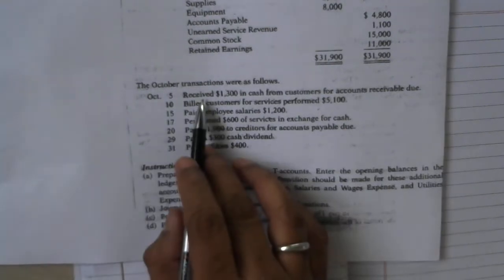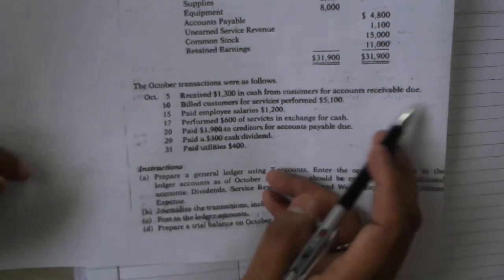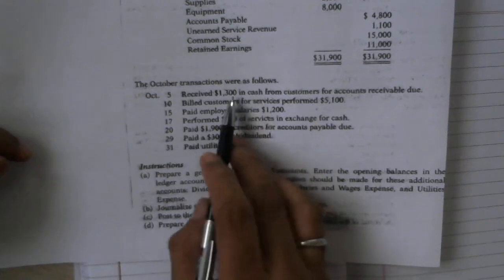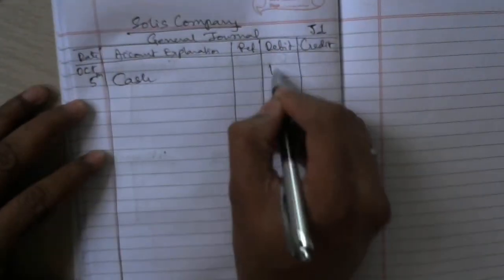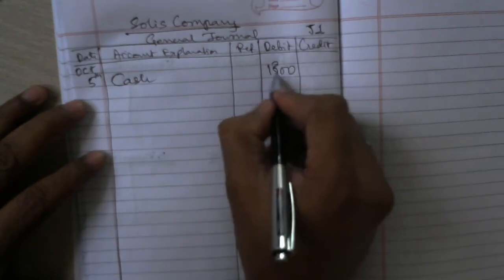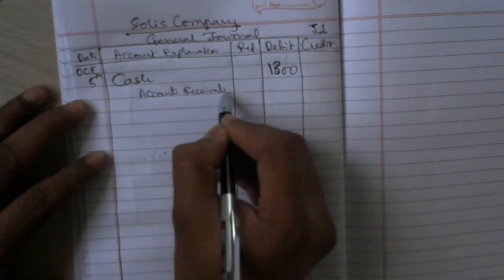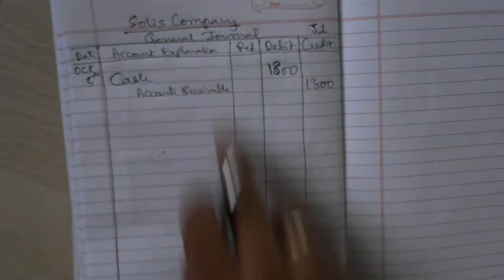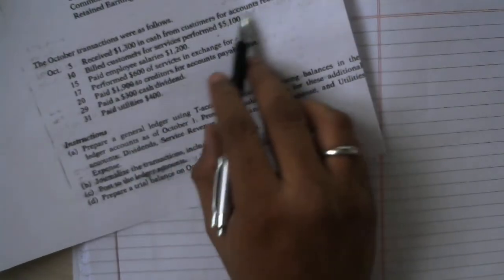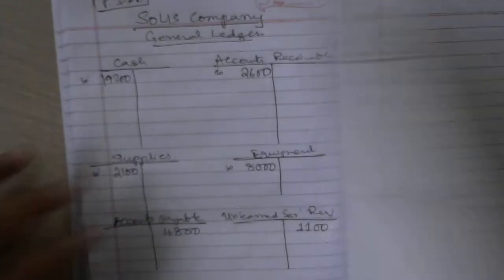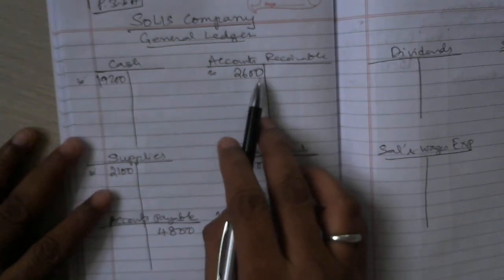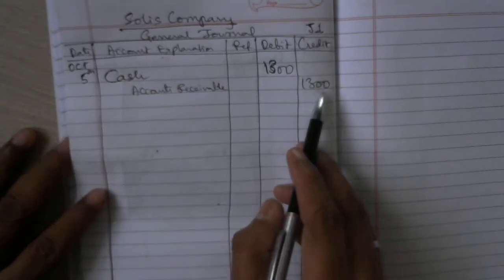First transaction: October 5th — received $1,300 in cash from customers for accounts receivable due. Cash is increasing, so cash is debited $1,300. Accounts receivable is credited by $1,300. This is not new cash — it is collecting on an existing accounts receivable balance of $2,600, so accounts receivable will come down.